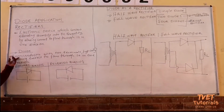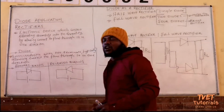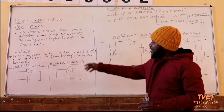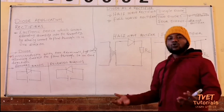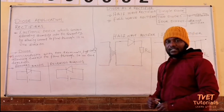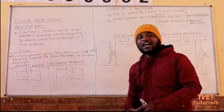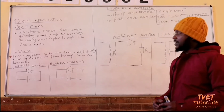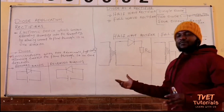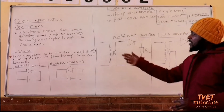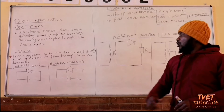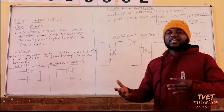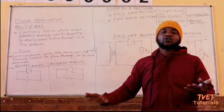Let's look at the definition of a semiconductor. In simple terms, a semiconductor is a material that can behave as a good conductor under certain conditions, and under other conditions it can operate as a good insulator. So this diode, being a semiconductor, can either conduct — allowing current to flow through it — or it can operate as an insulator, meaning it blocks the flow of current.